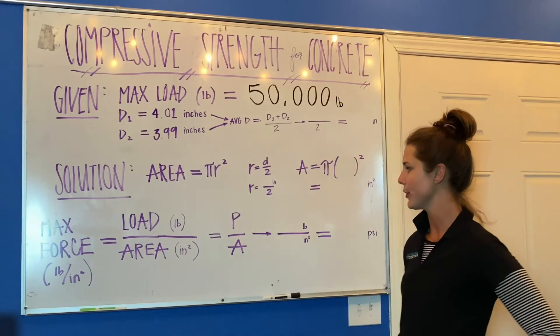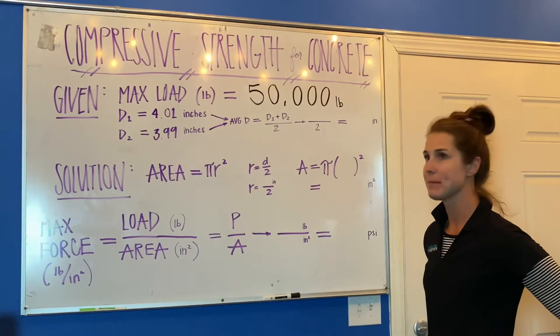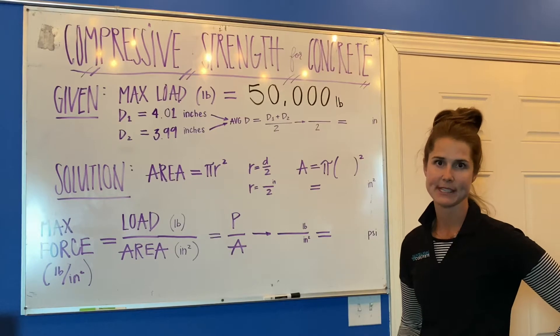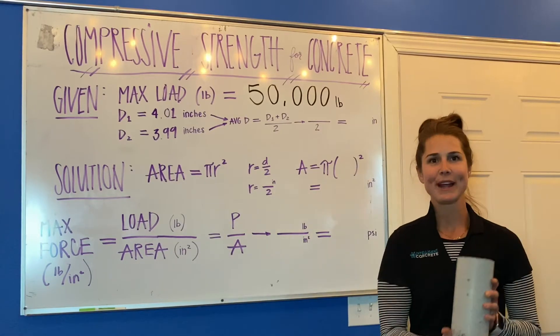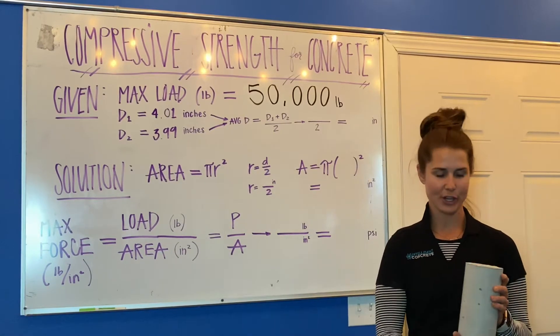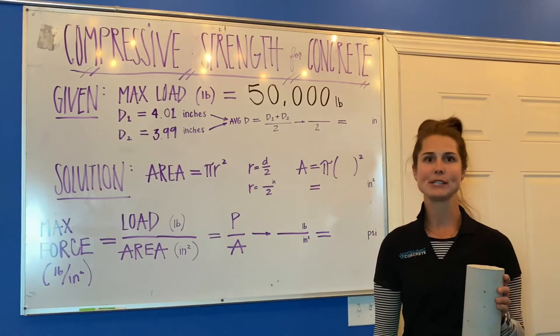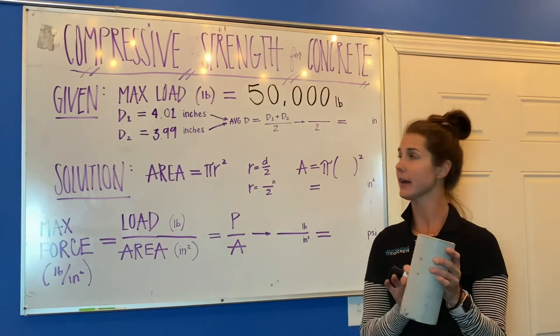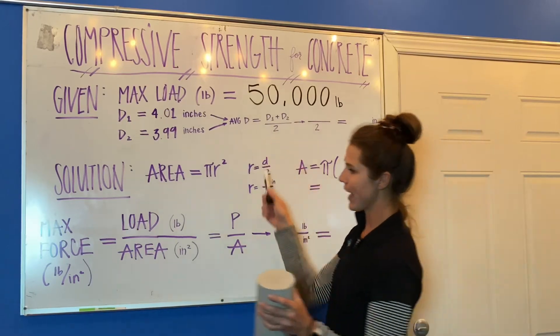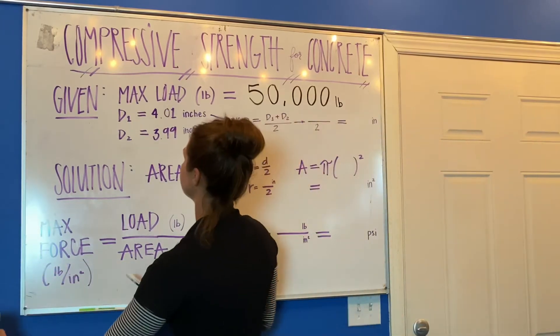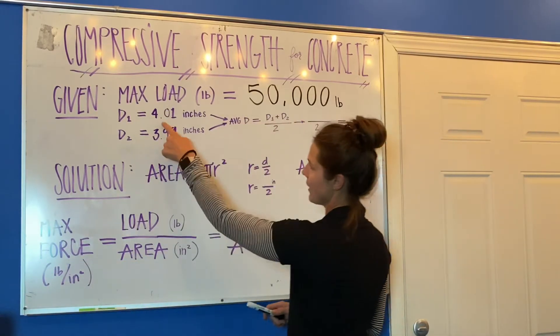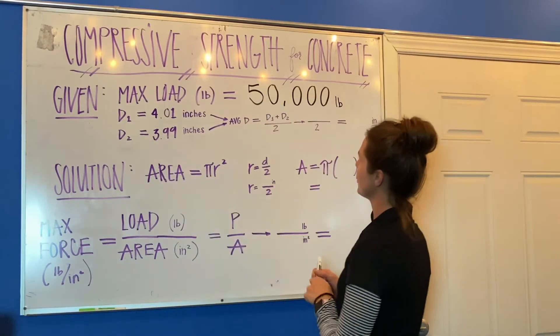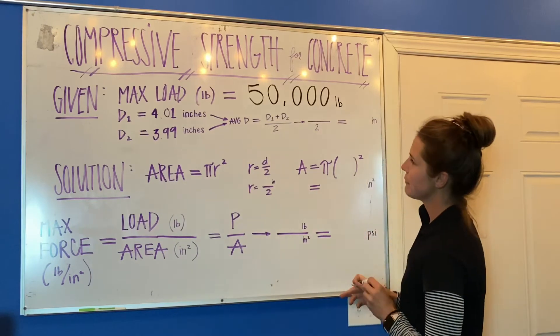Before you break the cylinder, you'll take two measurements of the diameter — one across each way — and so that gives us diameter one and diameter two.